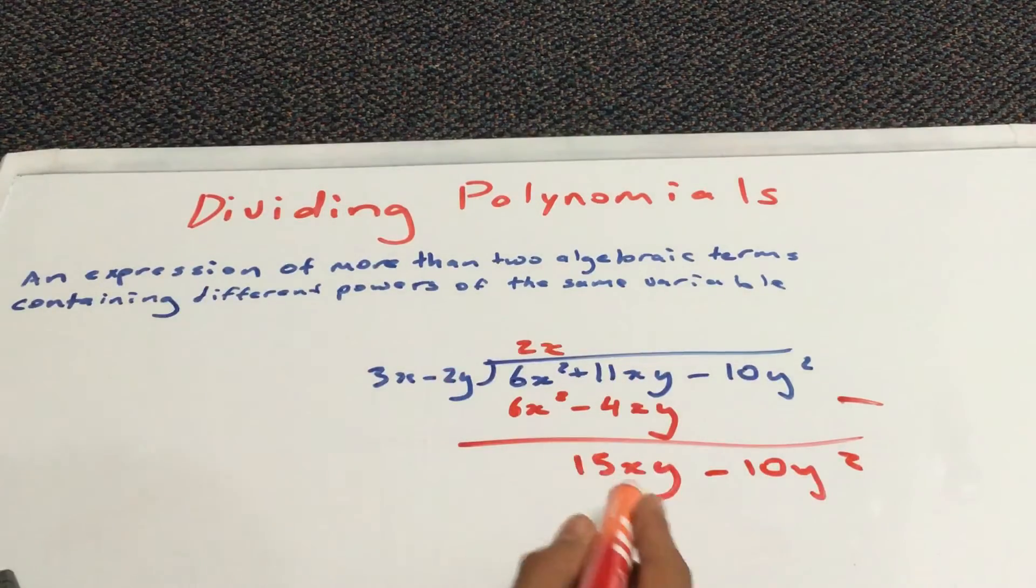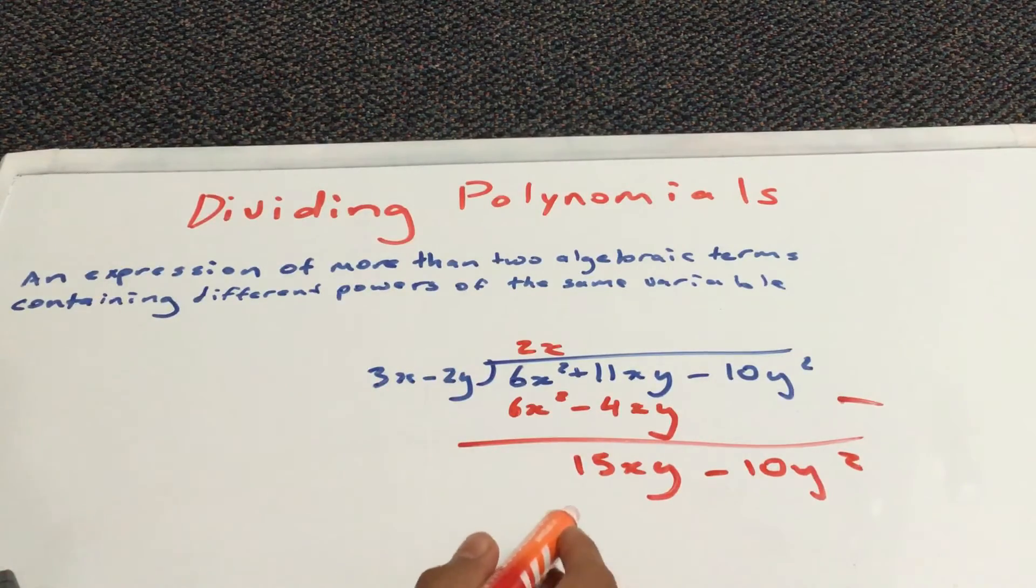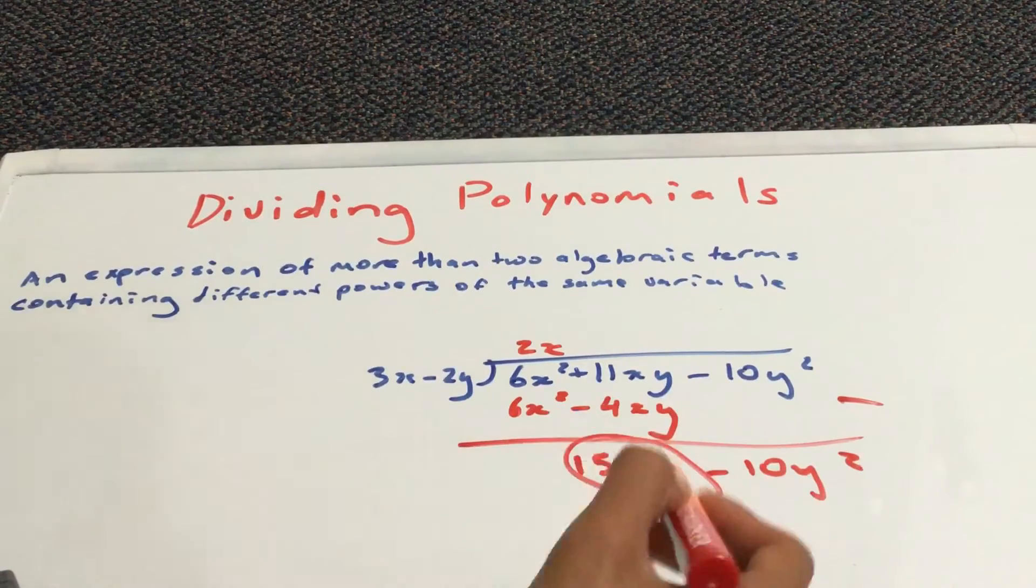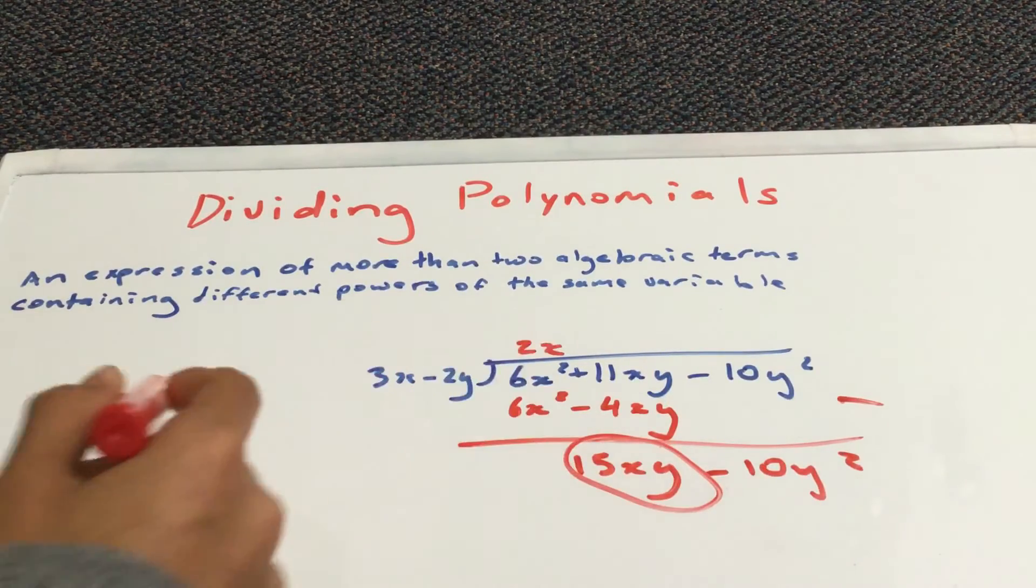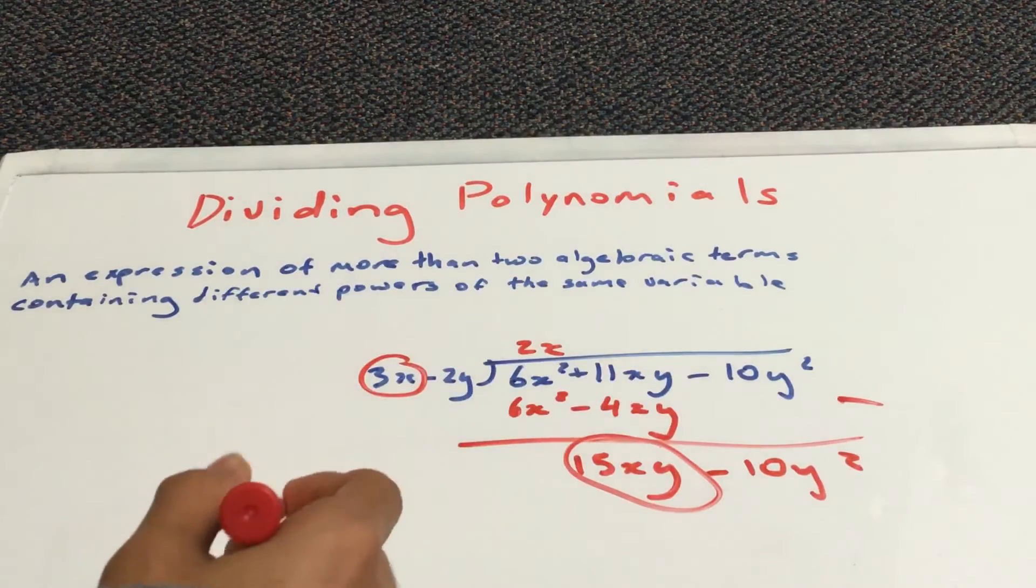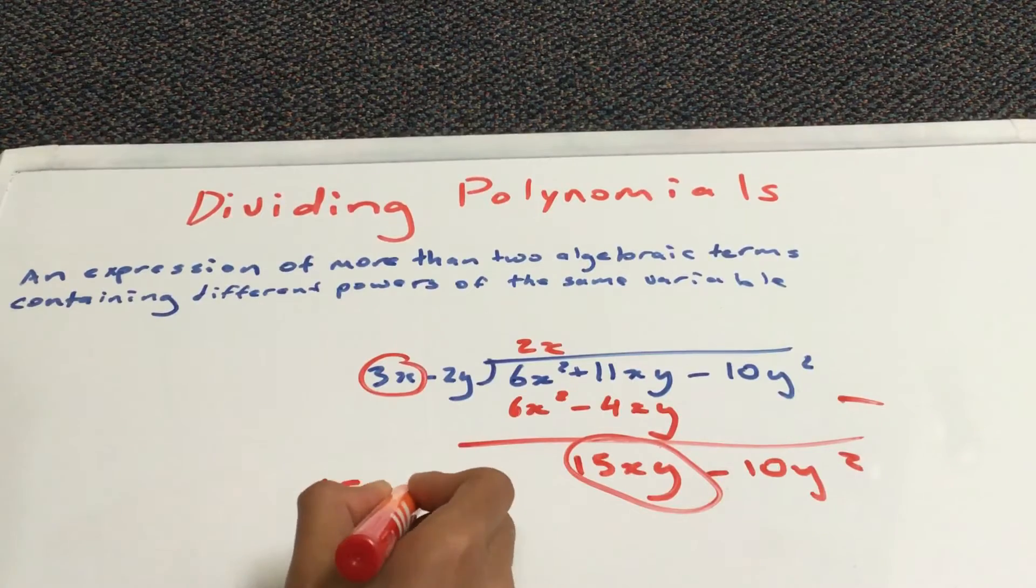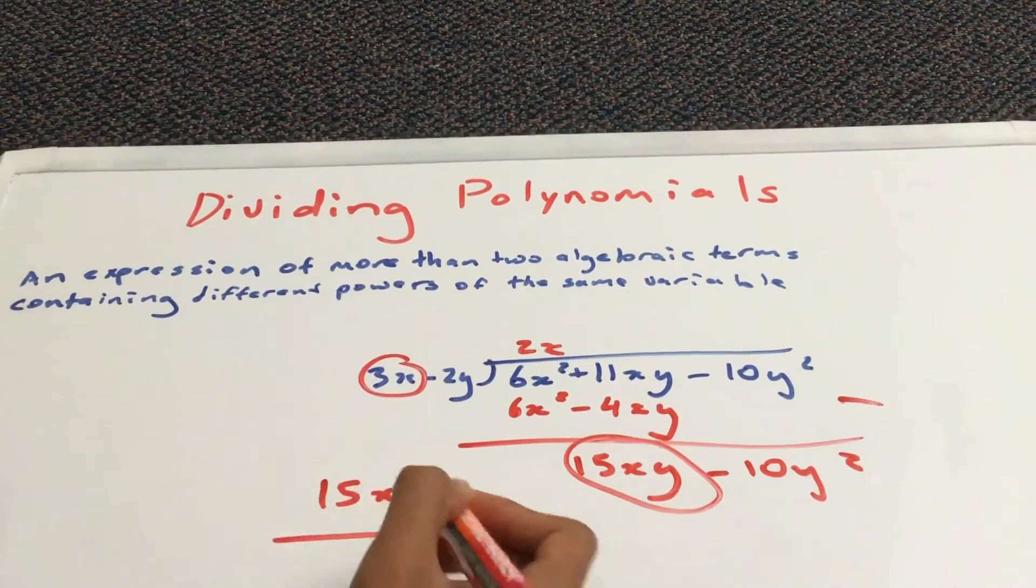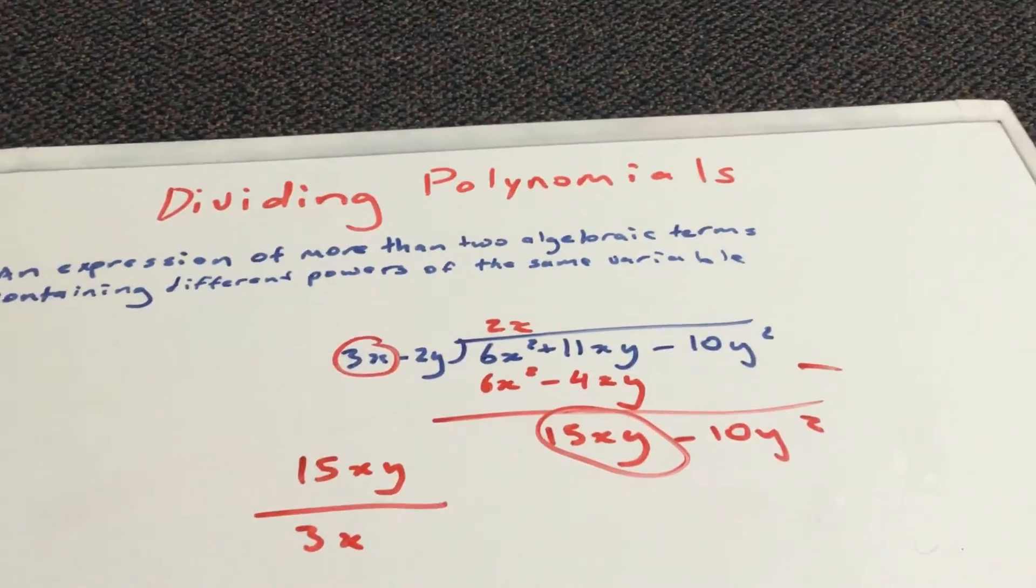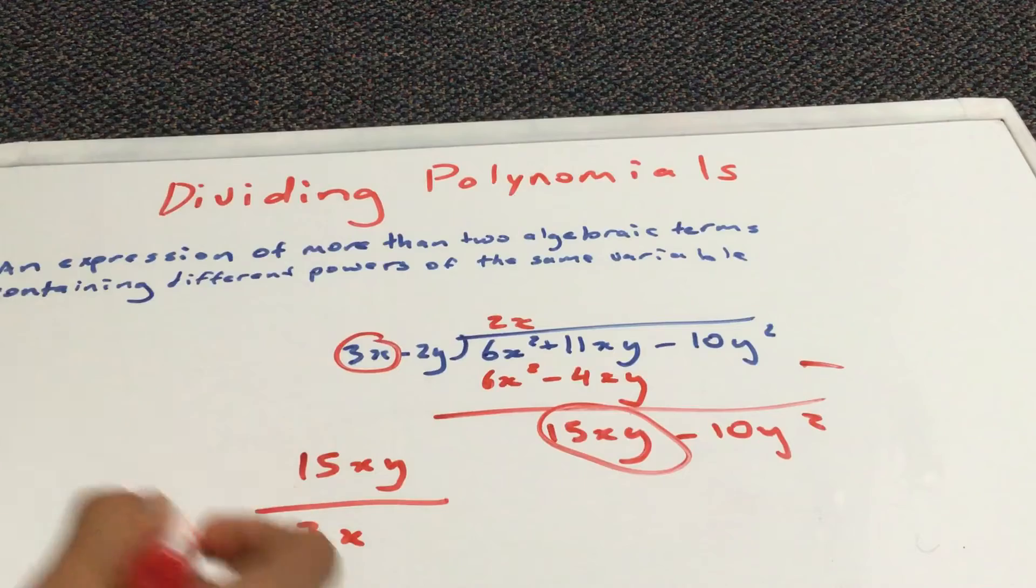And now, we take our result and we divide it by 3x minus 2y. If we do this by parts, we'll do this part first, divided by this. The first part, divided by the x. So, 15xy divided by 3x. I recommend doing this, as it's a better way to make sure you get the answer right.